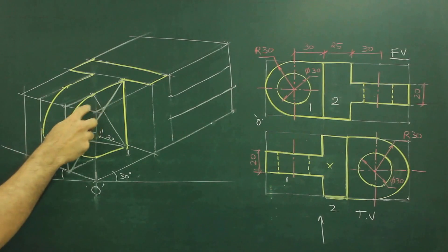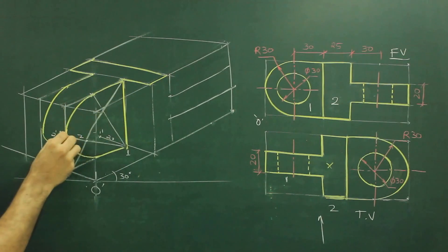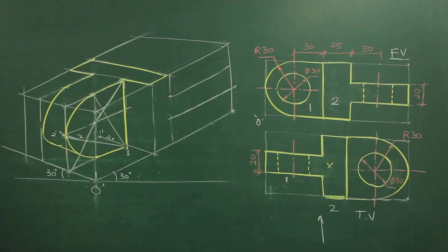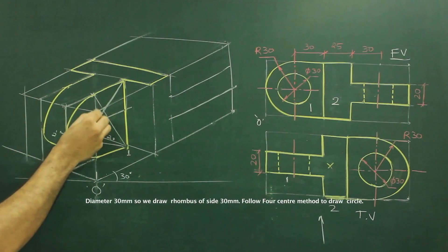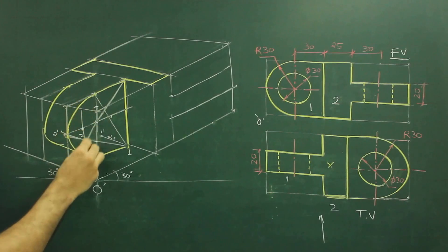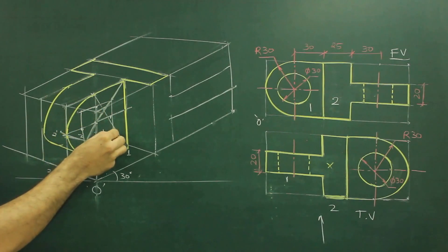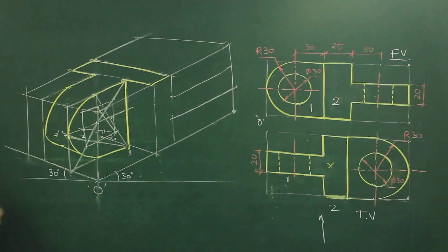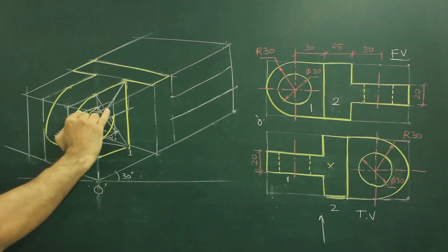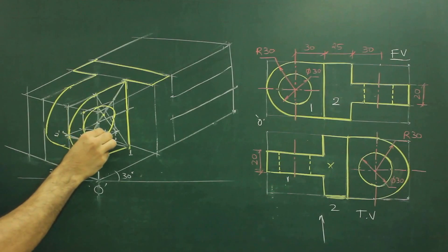Now we need to draw the inside circle. To draw the inside circle, first we need to find the center. We take half of this, which is 30, and half of this, which is 30. We draw a line and a vertical line, which is already drawn. From the center, we draw 15 in each direction — because we want diameter 30: 15 up, 15 down, 15 left, 15 right. We draw the longest diagonal again, mark these two sides, and join from the opposite corners. From each of these points we draw the arcs.